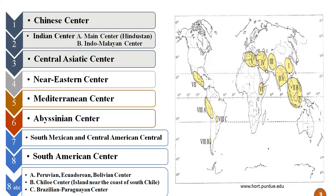In this diagram, we can see the actual Vavilov concept of the centers of origin or centers of diversity. He divided the centers of origin into eight different centers, each having sub-centres.